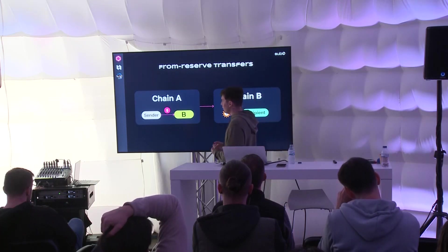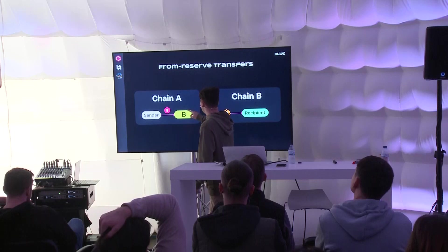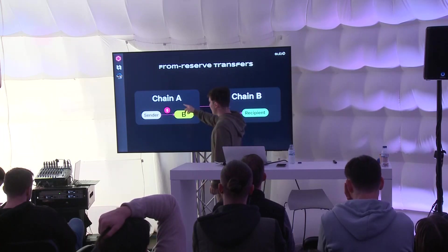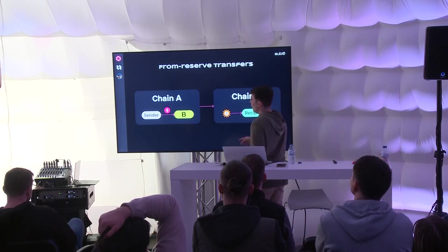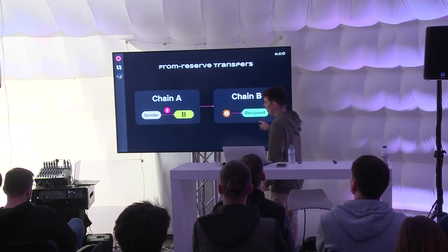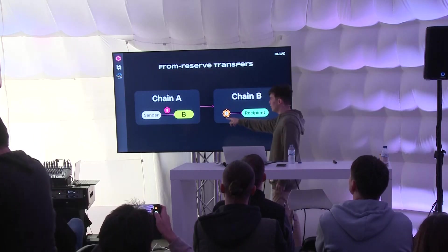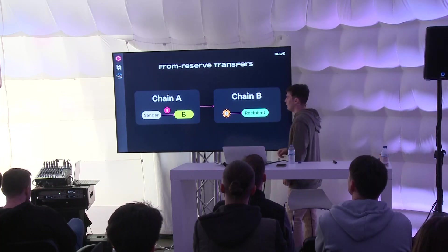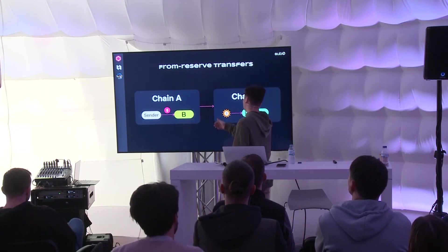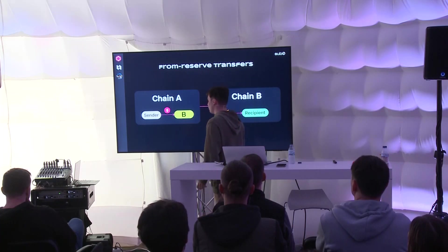When a transaction is initiated by the sender, tokens get transferred from the sender's account to the sovereign account of B on A — like an embassy of B on A. Once chain A does that, it sends a message to chain B saying it topped up B's sovereign account so B can give tokens to the recipient. Since chain B trusts chain A — which is required for reserve transfers — it can safely mint a derivative token in favor of the recipient. Chain A doesn't need to trust chain B since it only moves tokens between its own accounts.